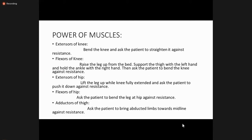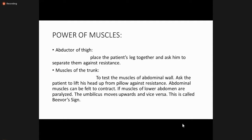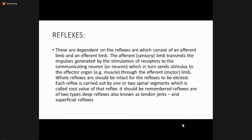You must check the extensor and flexor compartments of the knee, and extensor, flexor, adductor, and abductor of the hip. Place the patient's legs together and ask them to separate against resistance for the abductors of the thigh. To test the muscles of the abdominal wall, ask the patient to lift the head from the pillow against resistance. If lower limb muscles are paralyzed, the umbilicus will move upward — this is called Beevor's sign.